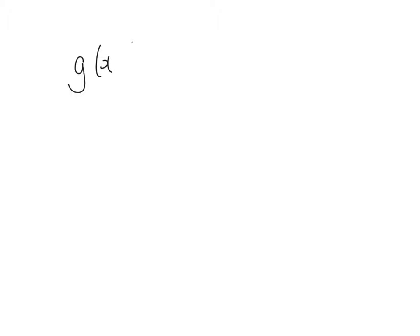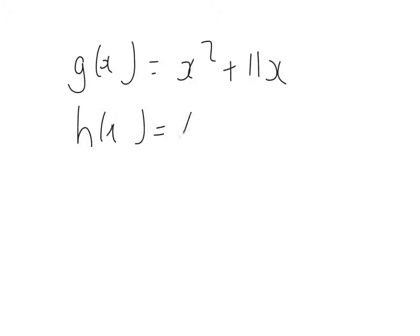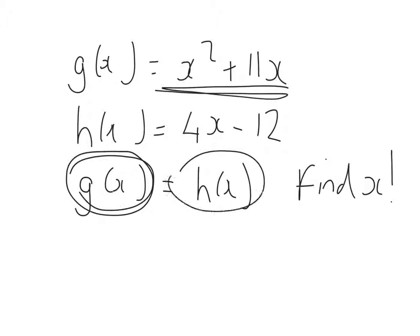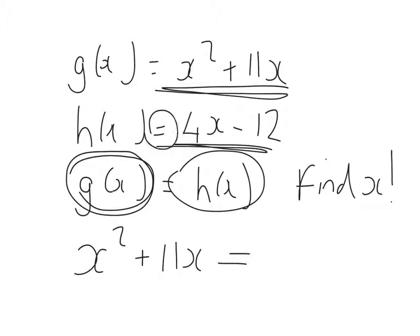More functional notation. Let's say that g of x equals x squared plus 11x, and h of x equals 4x minus 12. The question then says that g of x equals h of x, find x. In terms of picking up the first mark, there's a really easy and obvious first move. The question is telling me to make the g of x function equal to the h of x function, so I'll just go ahead and do that: x squared plus 11x is equal to 4x minus 12.